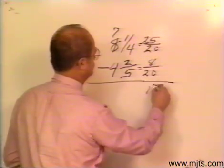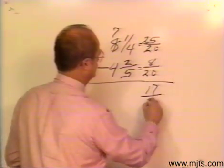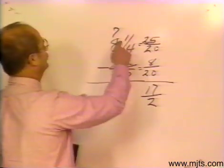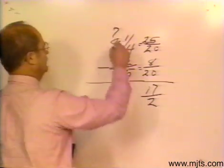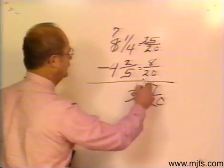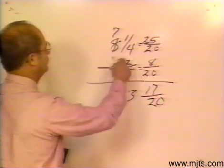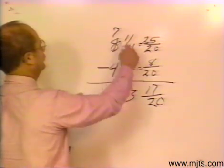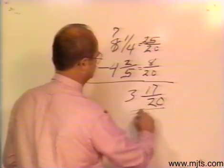That would give me 3. So I'll have 3 and 17/20 for an answer. If I take 4 and 2/5 into 8 and 1/4, my answer would be 3 and 17/20.